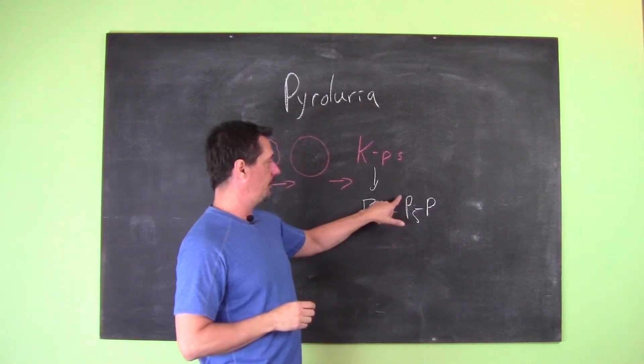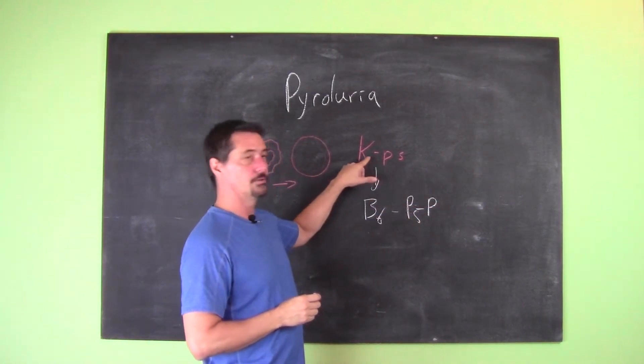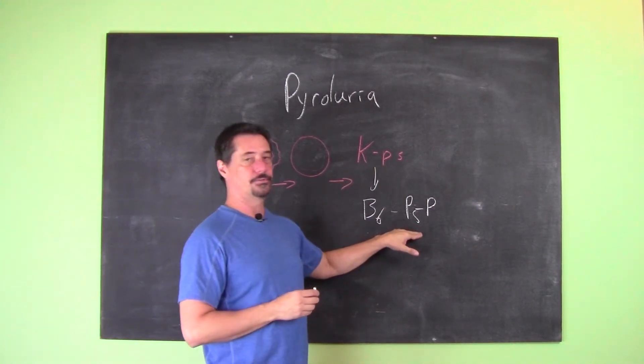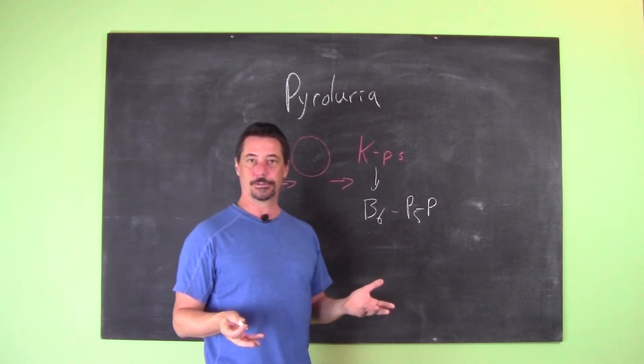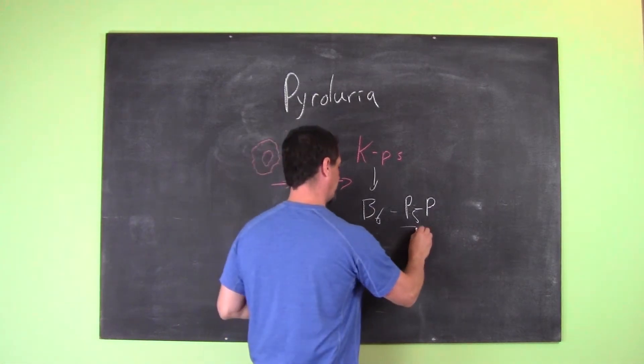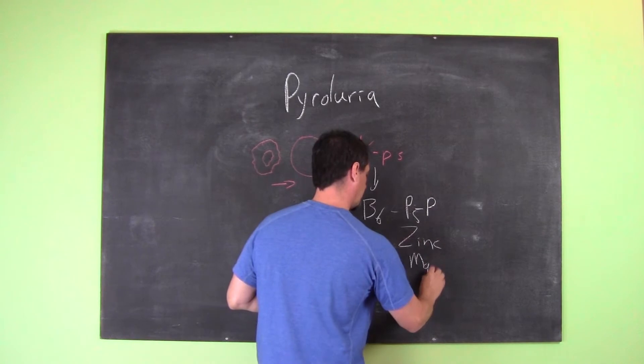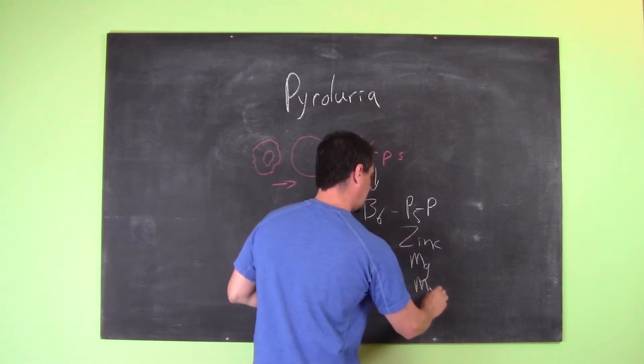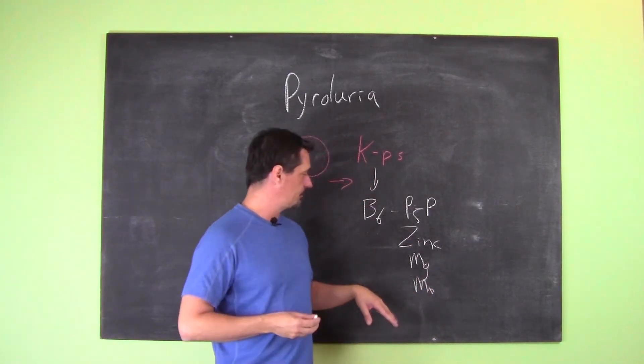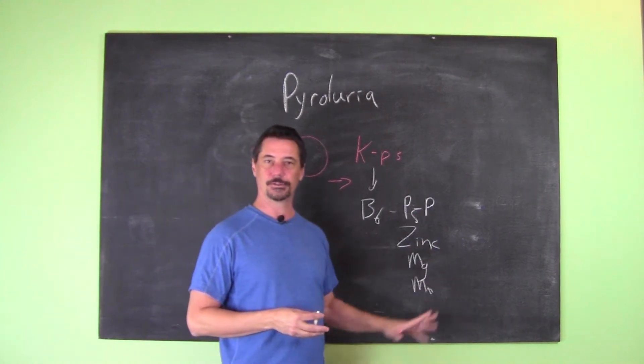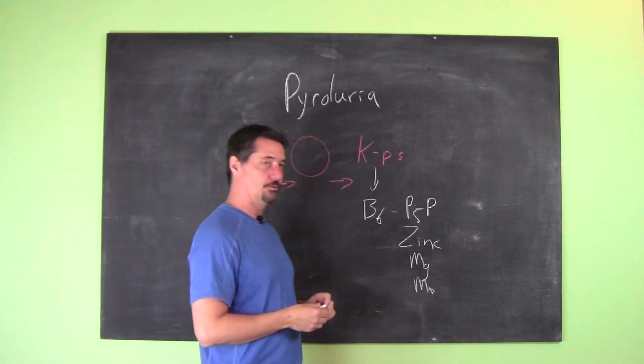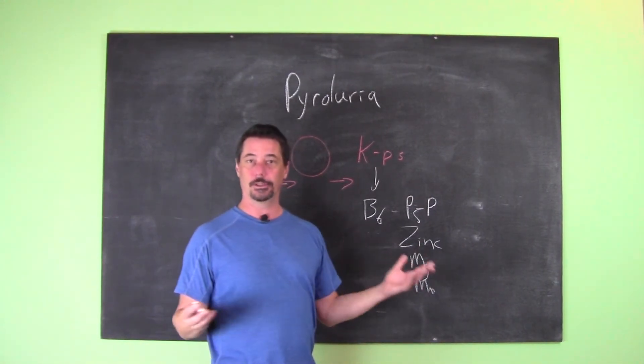If this molecule is getting bound to a cryptopyrrol or KP, you don't have it available within the rest of your body. It can also bind to zinc, magnesium, manganese, and a few other things. The research is still developing because it's a relatively new thing that we're discovering so many people have.